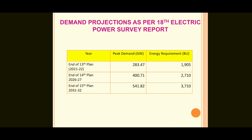Demand projections as per the 18th Electric Power Survey report: At the end of the 13th Plan, peak demand is 283.47 GW and energy requirement is 1,905 BU. For 2026-27, peak demand is projected at 400.71 GW and energy requirement at 2,710 BU. For 2031-32, peak demand is projected at 541.82 GW and energy requirement at 3,710 BU — approximately 1,000 BU rising each period.